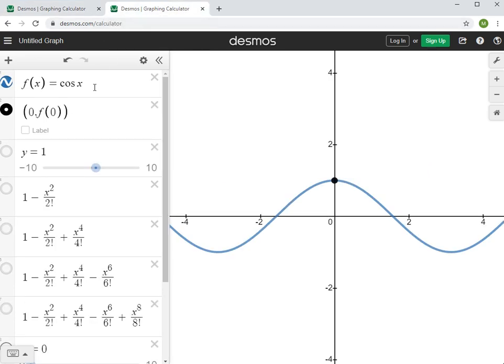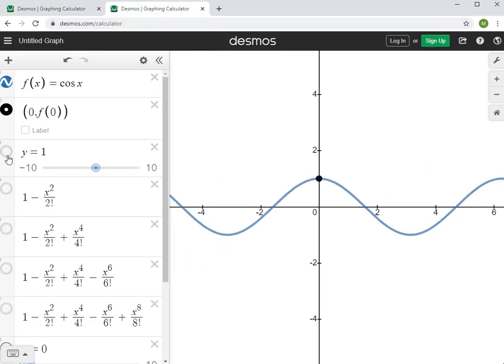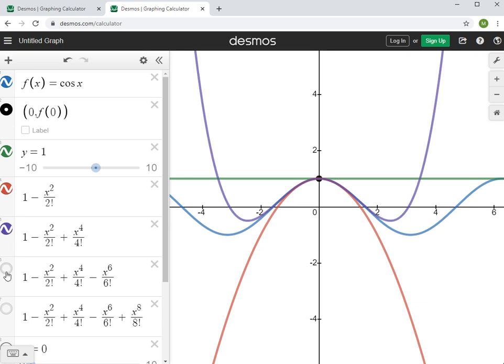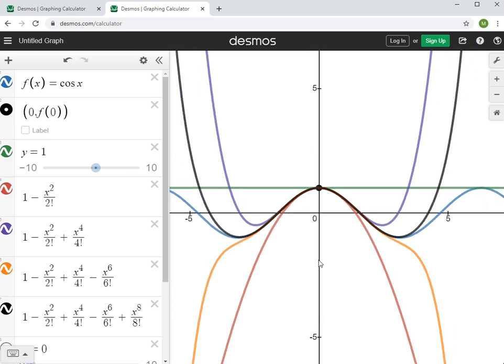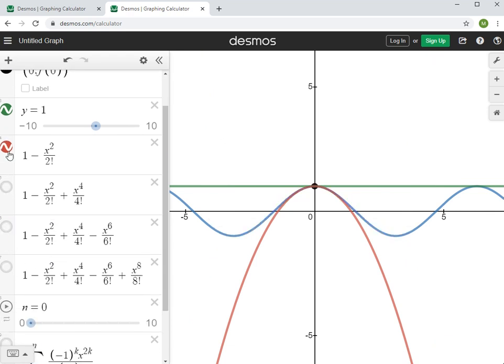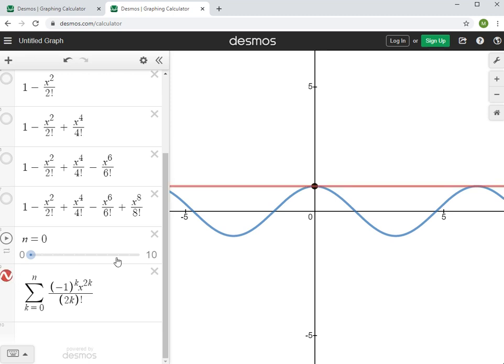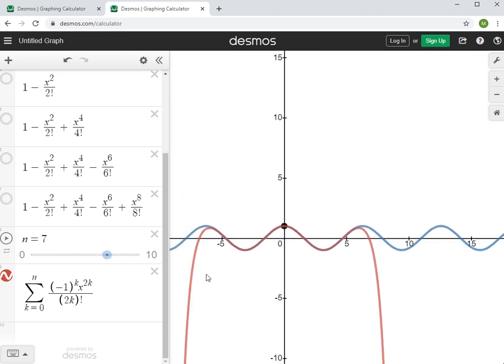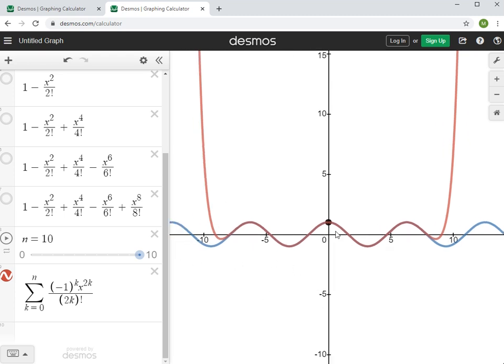Now for the cosine, we see something really similar. So 1 was our constant, our p_0 of x. Then 1 minus x squared over 2 factorial, that's our quadratic. Then the degree 4, the degree 6, that's an interesting looking curve. The degree 8. Same idea as what we saw with the sine. And again, I can go ahead and take these out and put in general expression. So again, we see this convergence happening as we increase the degree of the nth Taylor polynomial.